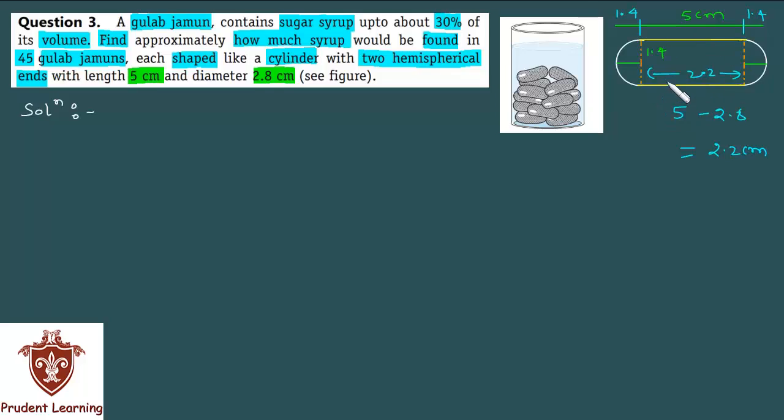Now all information is available. What do you need to do? Find the volume of sugar syrup in total 45 Gulab Jamuns. Let me tell you the strategy first, then we'll solve it. We'll first find the volume of one Gulab Jamun separately. Then multiply it by 45, so you'll get the total volume of 45 Gulab Jamuns. Then we'll find 30 percent of that, and you'll get the volume of sugar syrup.